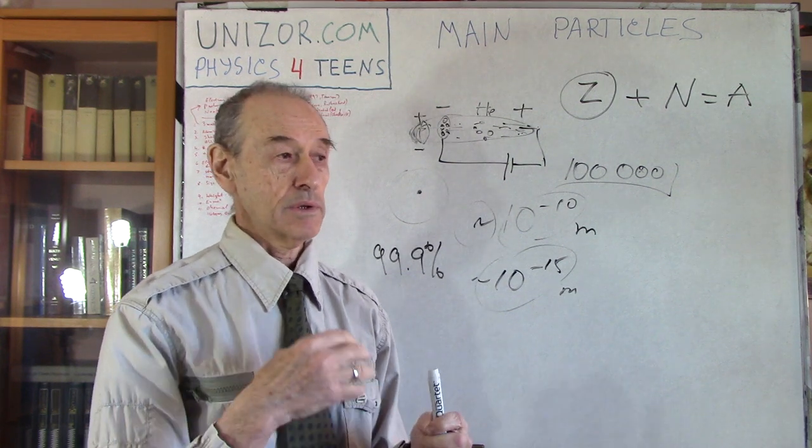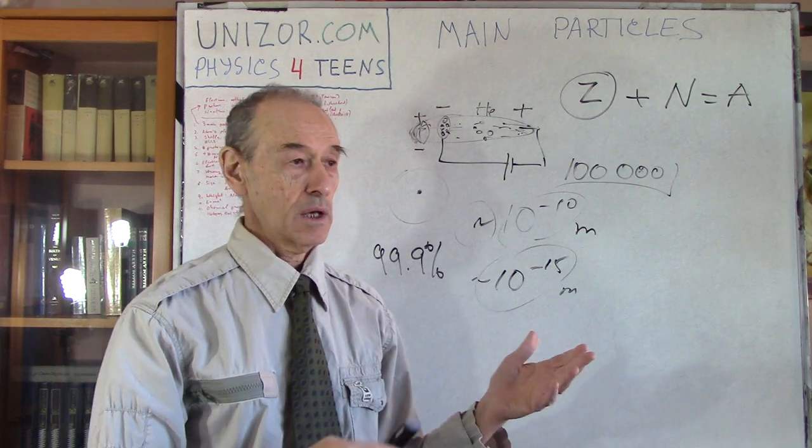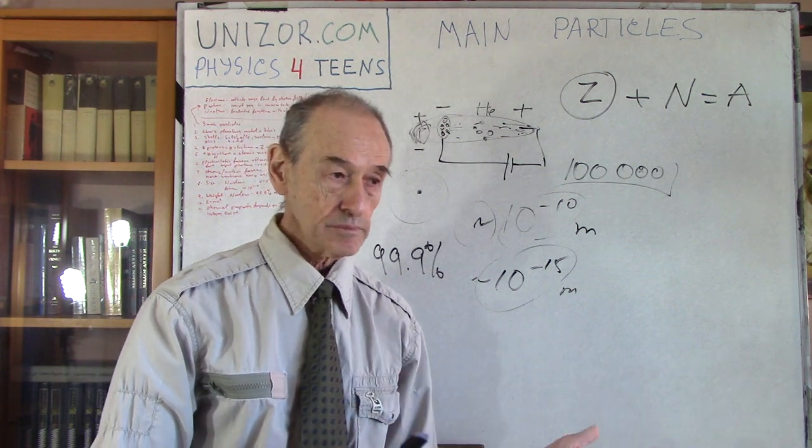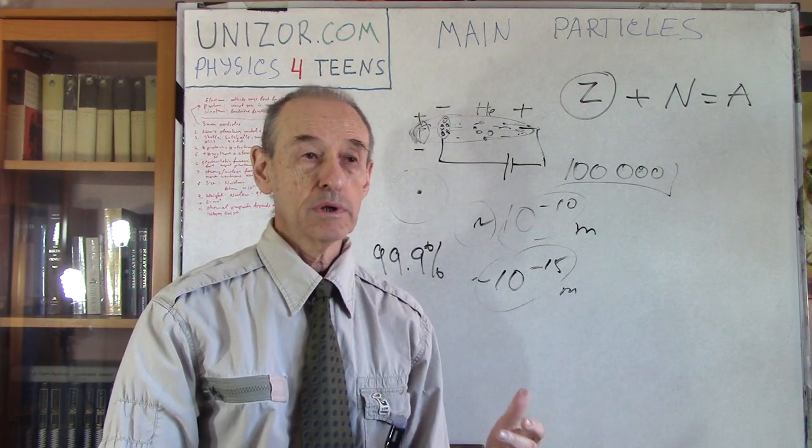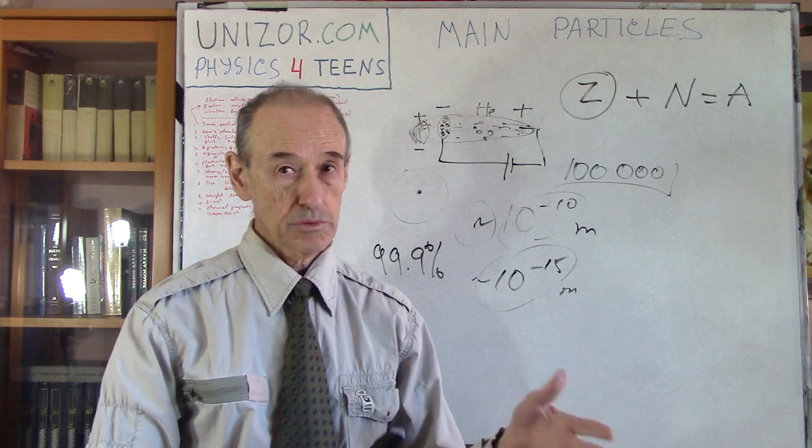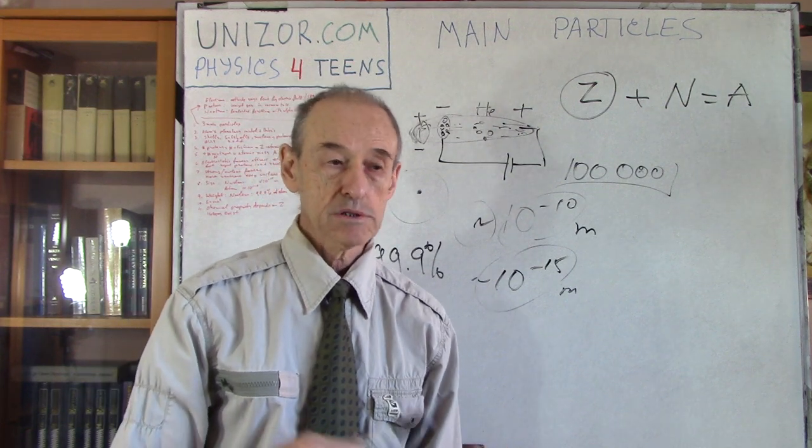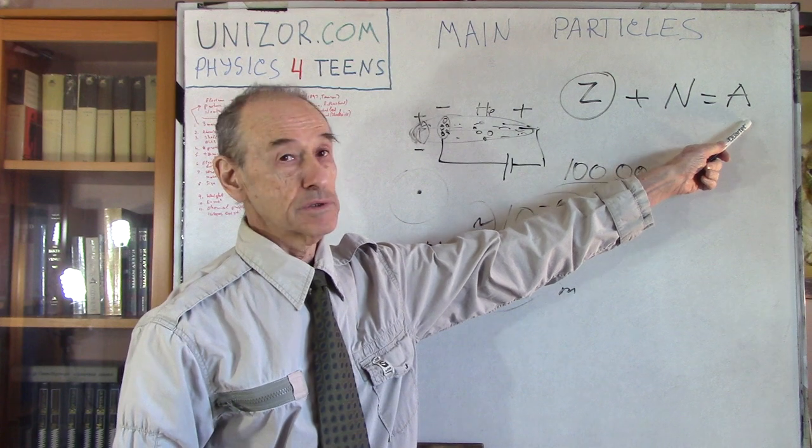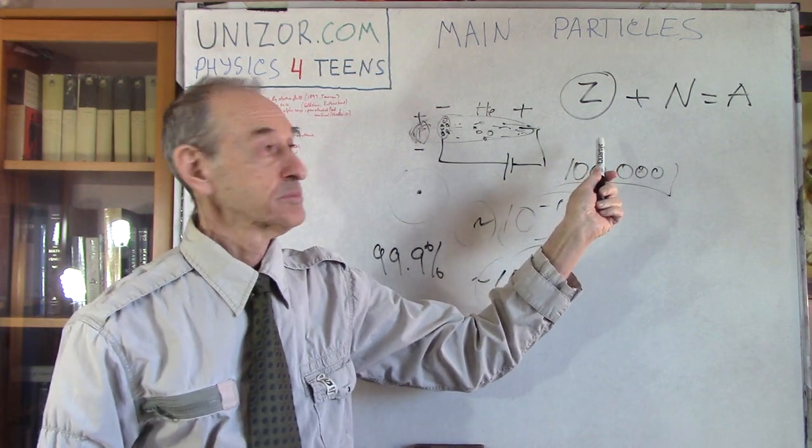There are so called isotopes of the same material. Like for example hydrogen. Hydrogen has generally speaking only one proton in the nucleus but it has an isotope with one neutron, so proton and neutron, and it has another isotope with two neutrons per one proton. So it's deuterium and tritium they are called. And many different elements have their isotopes. For example uranium. Uranium has two known isotopes: uranium 235, that's the mass, and there is 238 where Z is the same thing, I don't remember exactly maybe it's 92, so it's different number of neutrons.